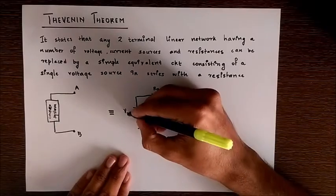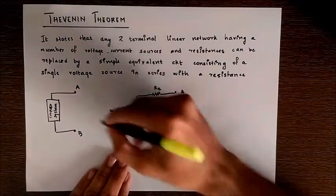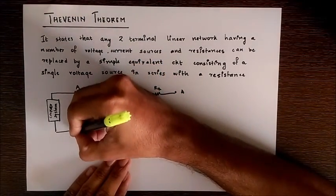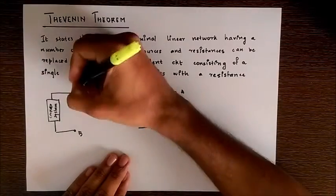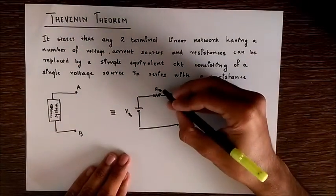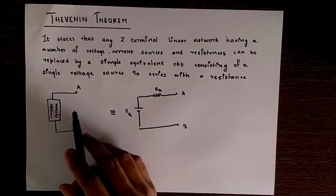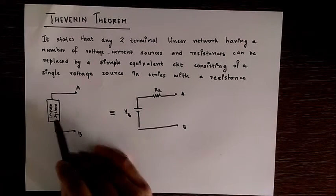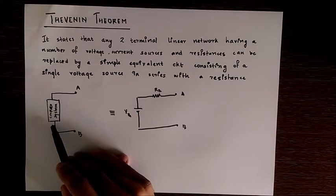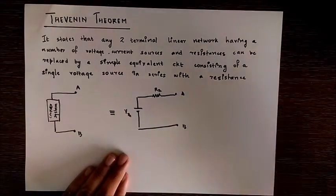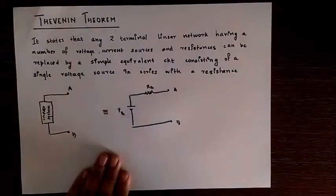So here this V-Thevenin is obtained by the voltage across these two terminals in our original system, and Rth is an equivalent resistance we obtain between these two terminals in our original system by deactivating all current and voltage sources.